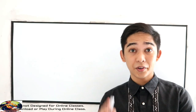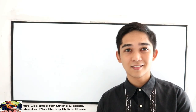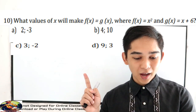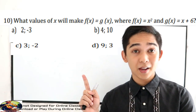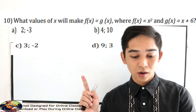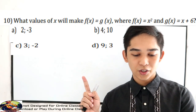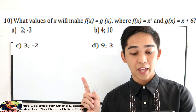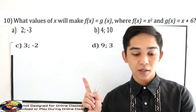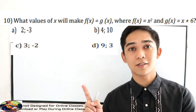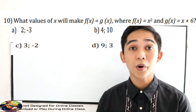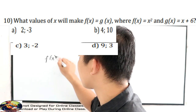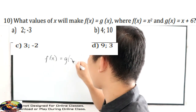Now we are in number 10. The question in number 10 is: what values of x will make f of x equal to g of x, where f of x is equal to x squared and g of x is equal to x plus 6? So we are going to find where f of x equals g of x.